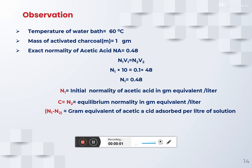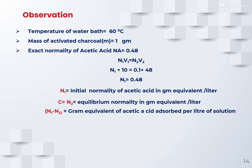Now we will see the observation and calculation part. The temperature of the water bath was 60 degrees centigrade. The mass of activated charcoal (M) is 1 gram, added to each bottle. To find the exact normality of the acetic acid, use the equation N1V1 = N2V2, where N2 is the normality of NaOH and V2 is the volume of NaOH required to neutralize 10 ml of acetic acid. After calculation, the actual normality N1 of the prepared acetic acid is 0.48 normal.